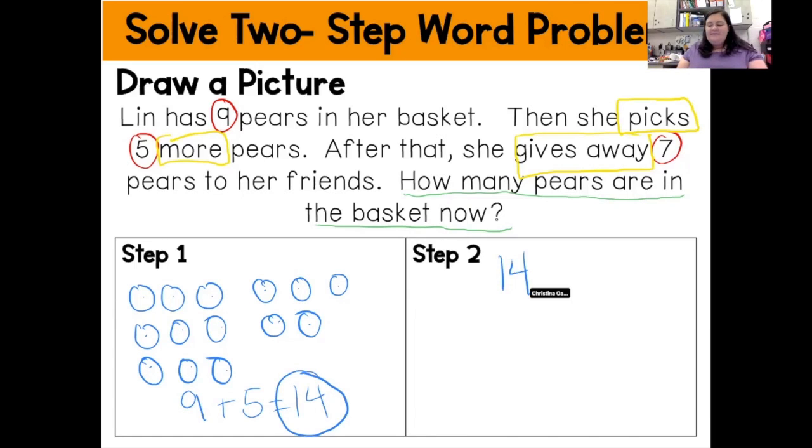So there's my 14. And again, I'm going to go ahead and I'm going to draw 14 pears. So that's five, six, seven, eight, nine, ten, eleven, twelve, thirteen, fourteen. All right.